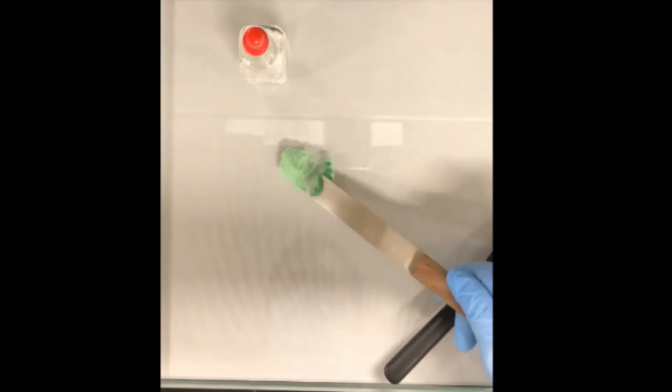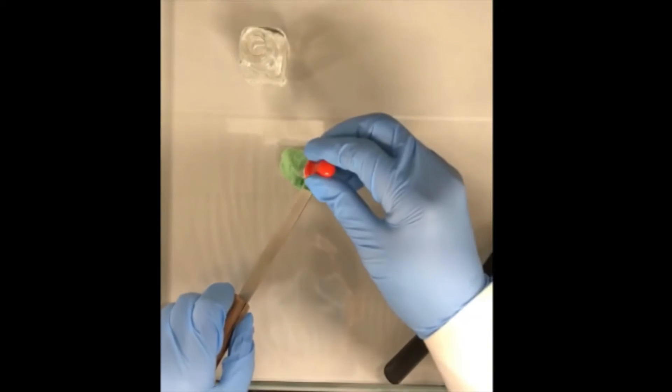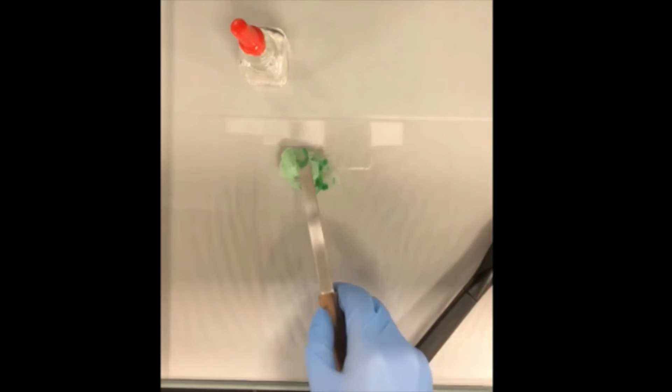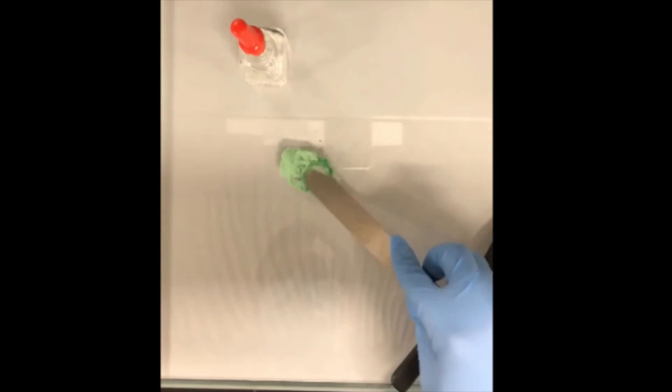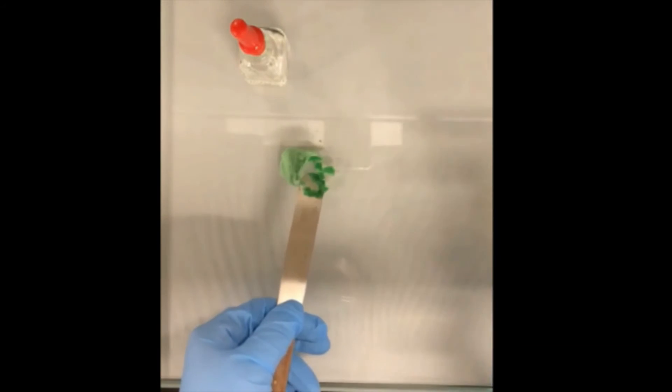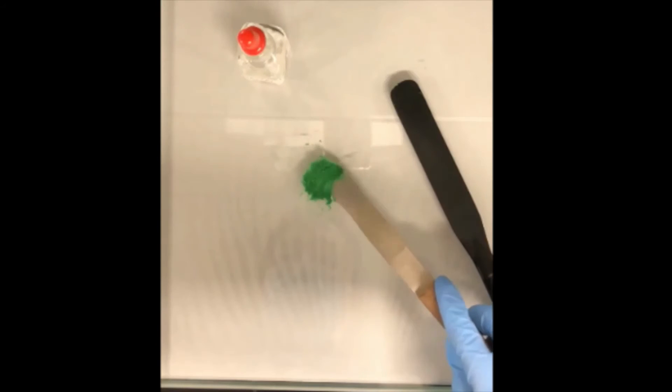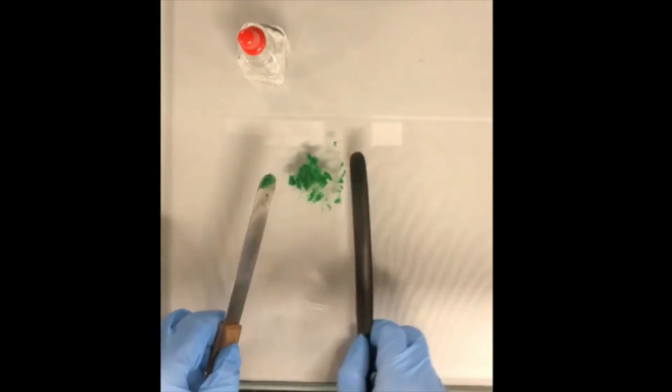So, the powder will be spatulated into the levigating agent. How to decide the amount of the levigating agent? The general rule is to use as minimal as possible. We can repeat the process until all the solid has been incorporated with the levigating agent. So, we can repeat the process.